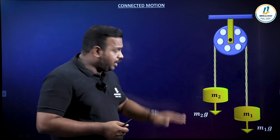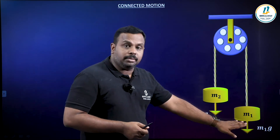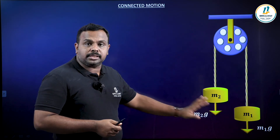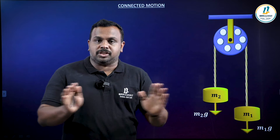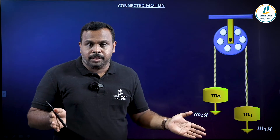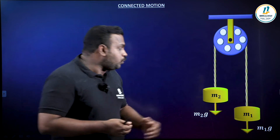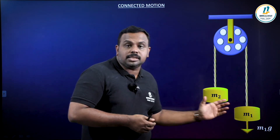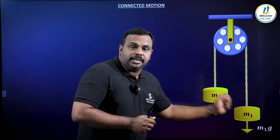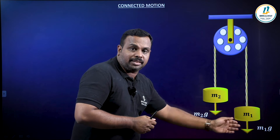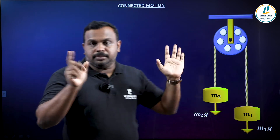The two masses M1 and M2 are present. The weight of M1 is M1g and the weight of M2 is M2g. If these two masses are equal, the system will be in equilibrium because there is no net force. So we are assuming M1 is greater than M2, which means M1g is greater than M2g, so M1 will go down and M2 will go up with a common acceleration.